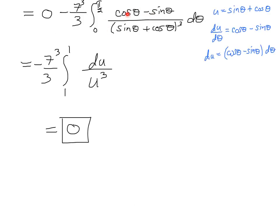For the second integral, I use a u-substitution. Let u = sinθ + cosθ, so du = (cosθ − sinθ) dθ. The integrand becomes du/u³. Checking the limits: when θ = 0, u = sin(0) + cos(0) = 1; when θ = π/2, u = sin(π/2) + cos(π/2) = 1. Since the upper and lower limits are both 1, this integral is also 0.